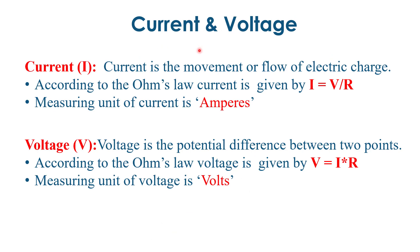Next is voltage and current. Current is denoted by I. Current is basically the movement of electric charge — the flow of electric charge is called current. According to Ohm's law, current is given by I = V/R. The measuring unit of current is the ampere.